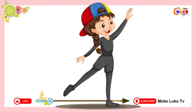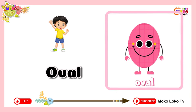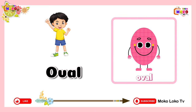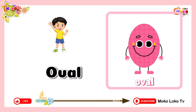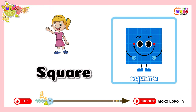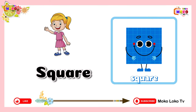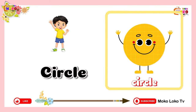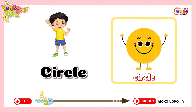Once again kids. Oval. It's shape of oval. Square. It's shape of square. Circle. It's shape of circle.